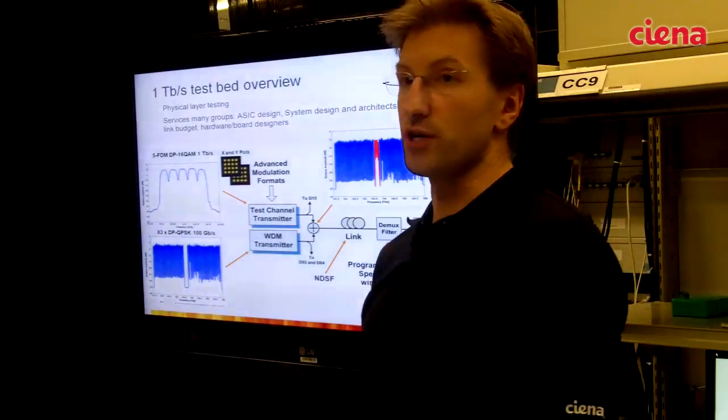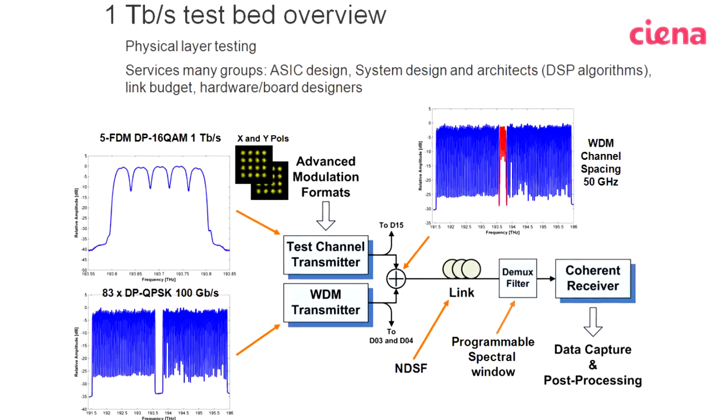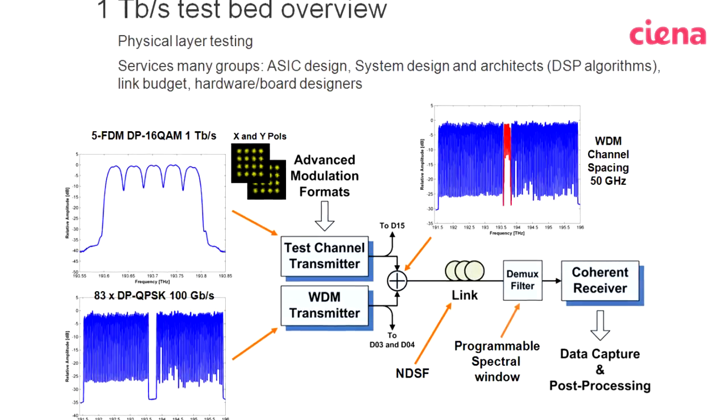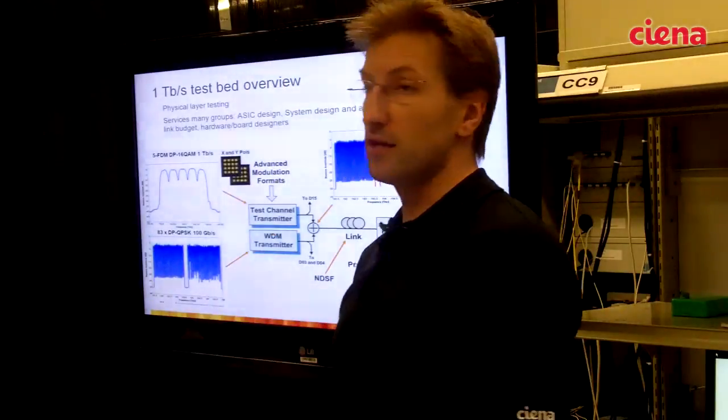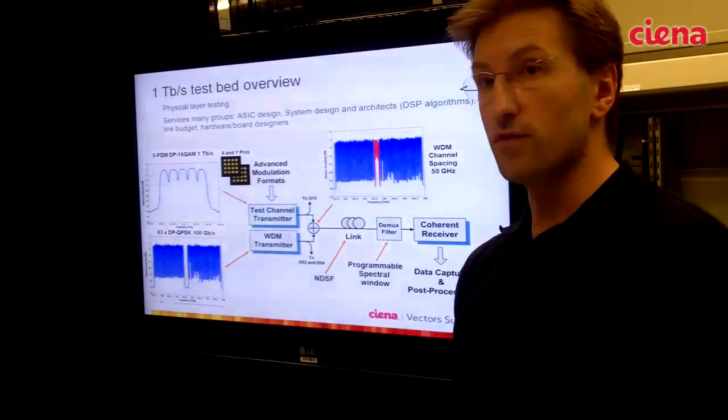The super channel is combined with 83 100 gigabit per second neighbor channels to provide realistic traffic on the network. The neighbor channels and the super channels are combined together and they are sent over the link.